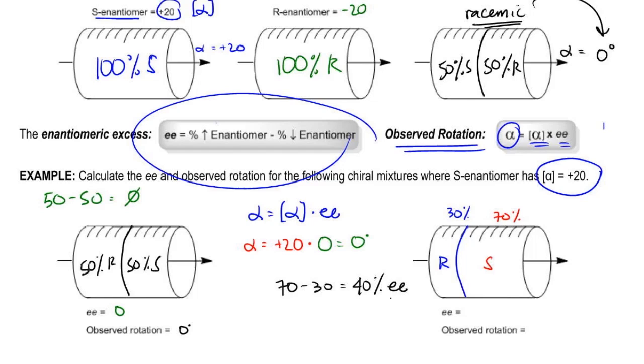So what's my equation? Well, my equation says that my observed rotation should be equal to my specific rotation which is still positive 20 times my EE which is now going to be 40%.